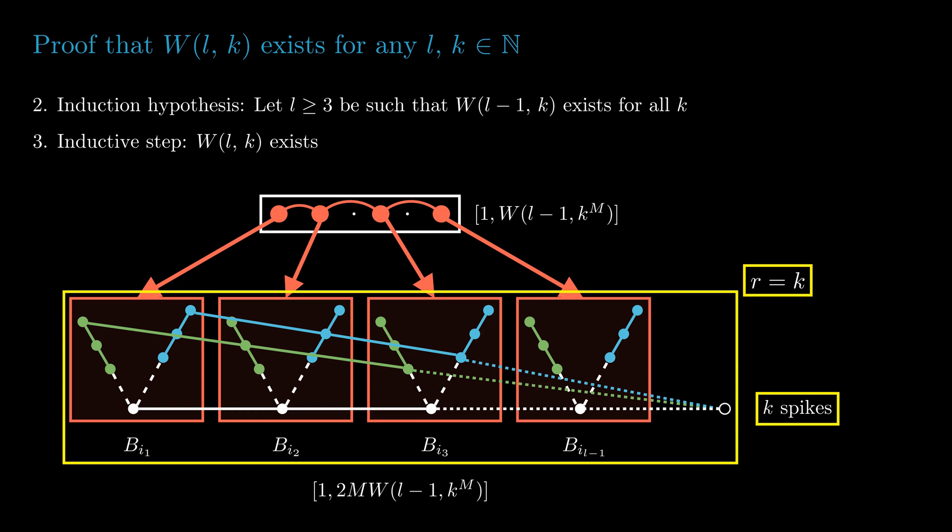This finishes our proof of the inductive step, and we have thus proven that the van der Waerden number for (l, k) exists.